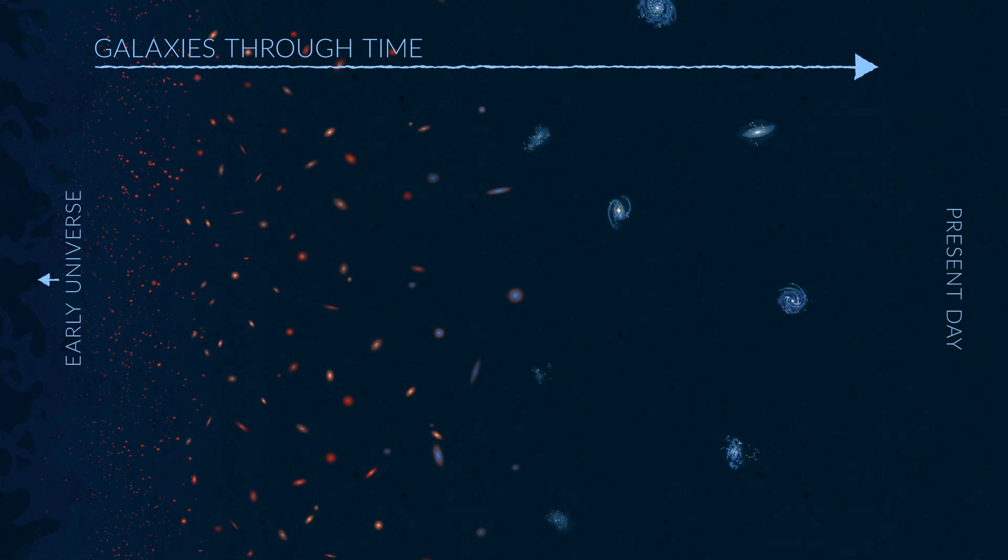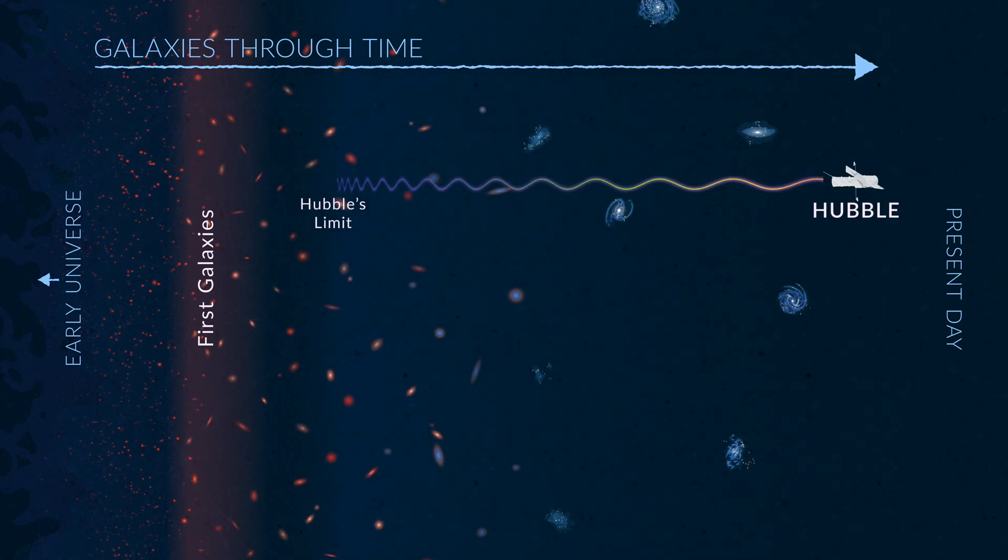This is because the universe is expanding, and as space itself stretches, so does the wavelength of the light from the first galaxies, putting them beyond the detection of our most powerful telescopes.